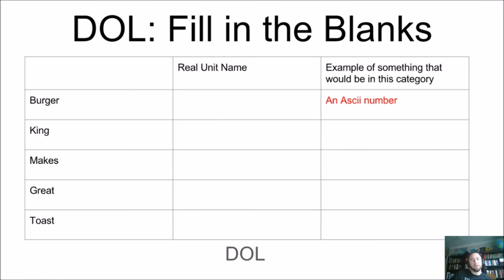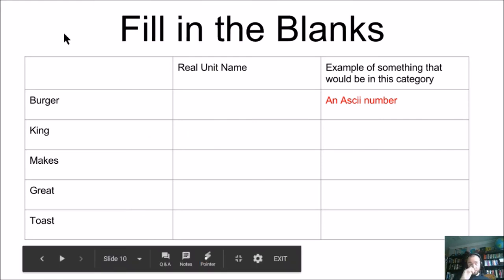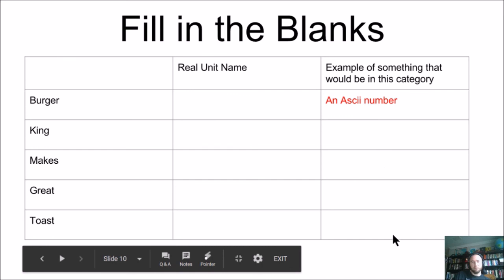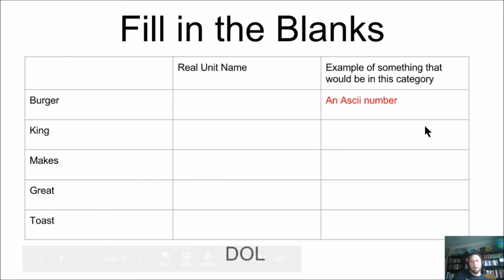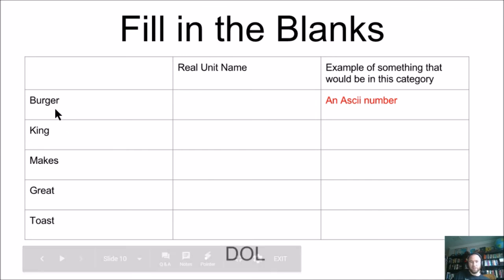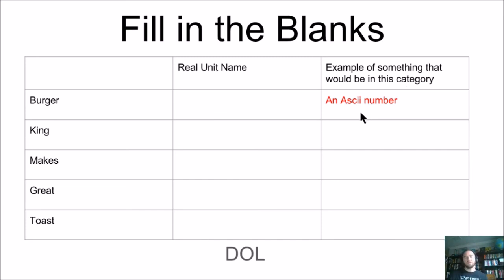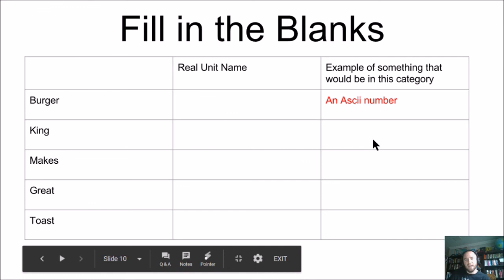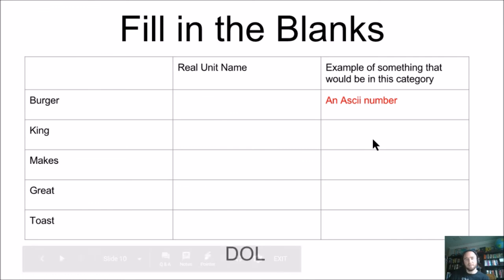And now for the DOL of the day. Here's an opportunity for you to fill in the blanks using 'Burger King Makes Great Toast.' Tell me what the real unit name is for each letter, and give me an example of something you'd see in that category. For example, for bytes, a single byte could be an ASCII number — the number 65 represents 'A' in ASCII. For kilobytes, what's something in the world that's measured in kilobytes? And so on.